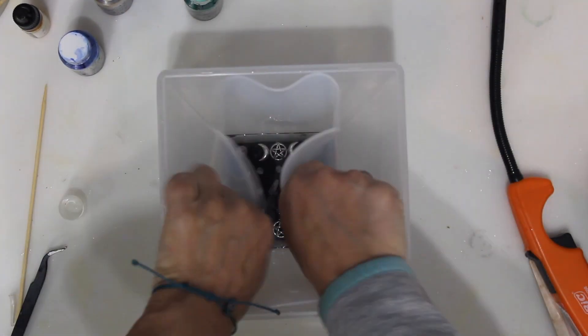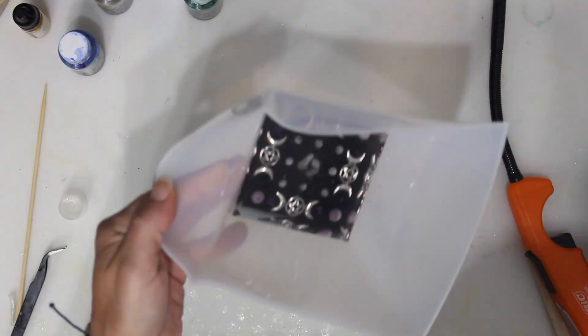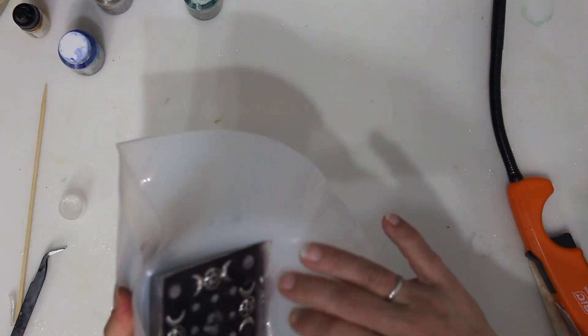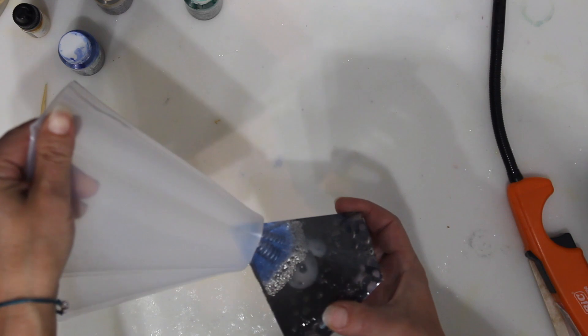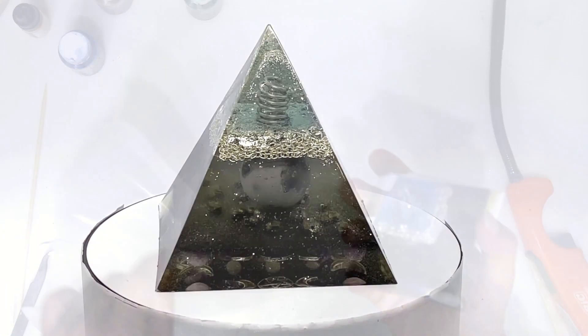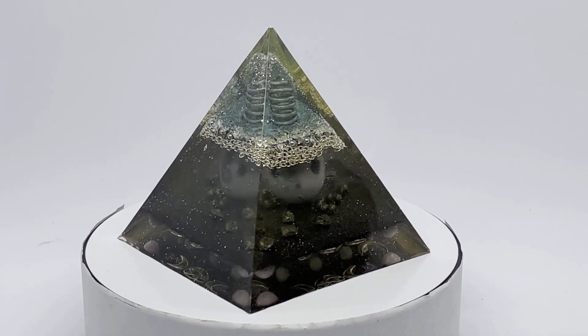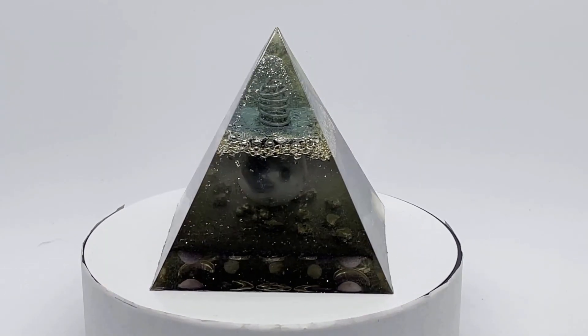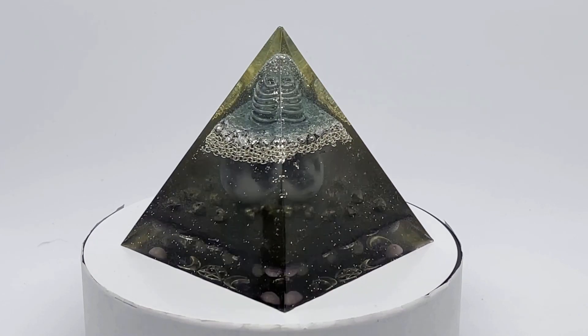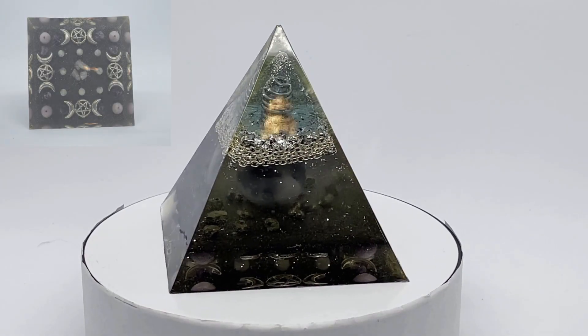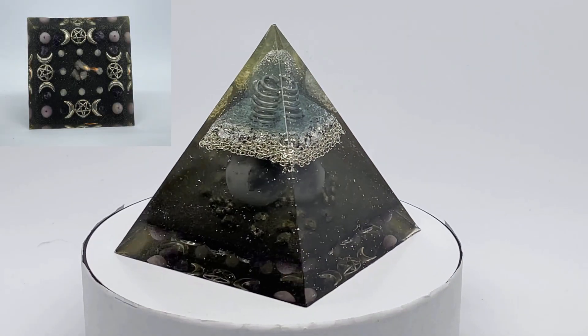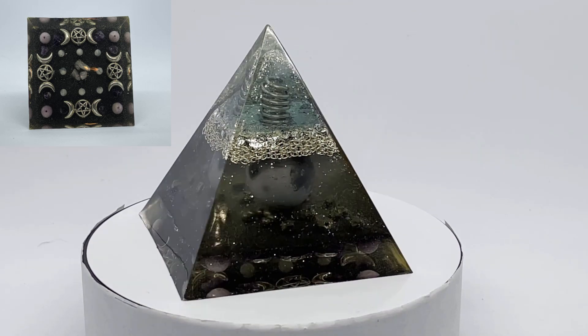After 12 to 24 hours of additional curing, we can finally demold the moon orgonite. This is such a beautiful piece. I don't know about you, but I'm always looking for the moon over my shoulder when I'm outside.